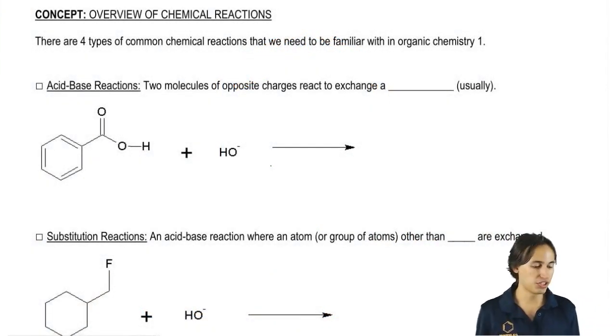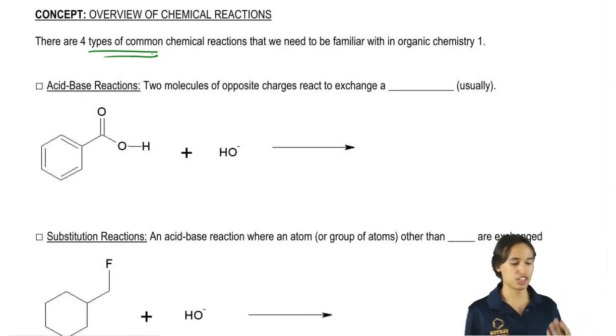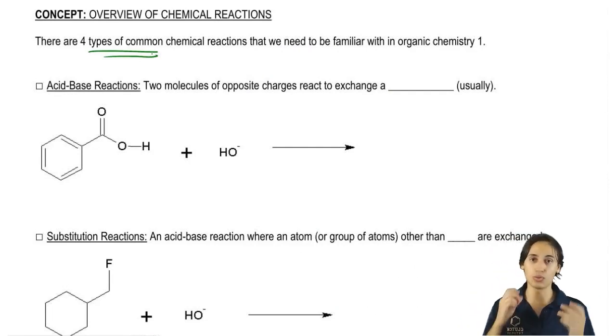So as I said, there's four major types and the first one is the easiest one. This is going to be what we call an acid-base reaction and in most textbooks, this will have its own chapter. So usually we'll spend an entire chapter just talking about acid-base reactions.